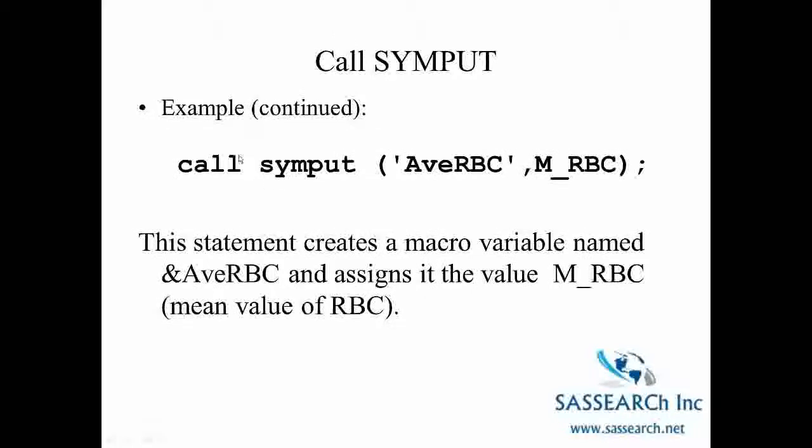In summary this statement created a macro variable named ampersand AvRBC and it assigned it the value of M underscore RBC which was the mean value of the RBCs. And then we could make use of this global macro variable in other data steps.